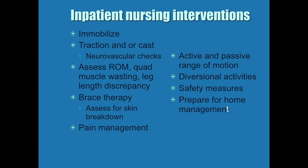Inpatient interventions include immobilization of the affected joint — the child may be put in traction or casts. If either is used, you need to do a neurovascular assessment and assess range of motion. You may notice wasting of the quadricep muscle; we actually measure it and may find a one to two centimeter difference between the quads. There may also be a leg length discrepancy because the femur no longer has its full ball part of the joint.